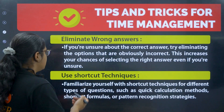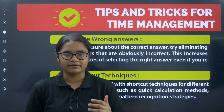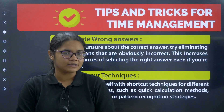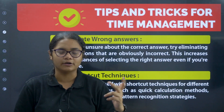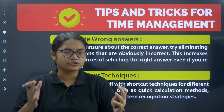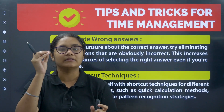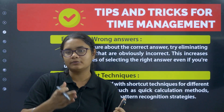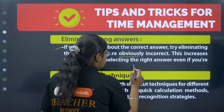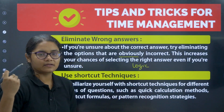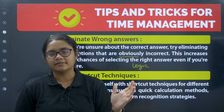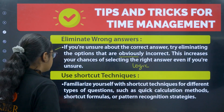Tip three: eliminate wrong answers. When you have four options and can't decide the answer, use the elimination method. Try to eliminate one or two options — fewer options mean less confusion and a higher probability of reaching the correct answer. Use logic: eliminate completely irrelevant options, and if two options are opposite to each other, you can also eliminate one of them.